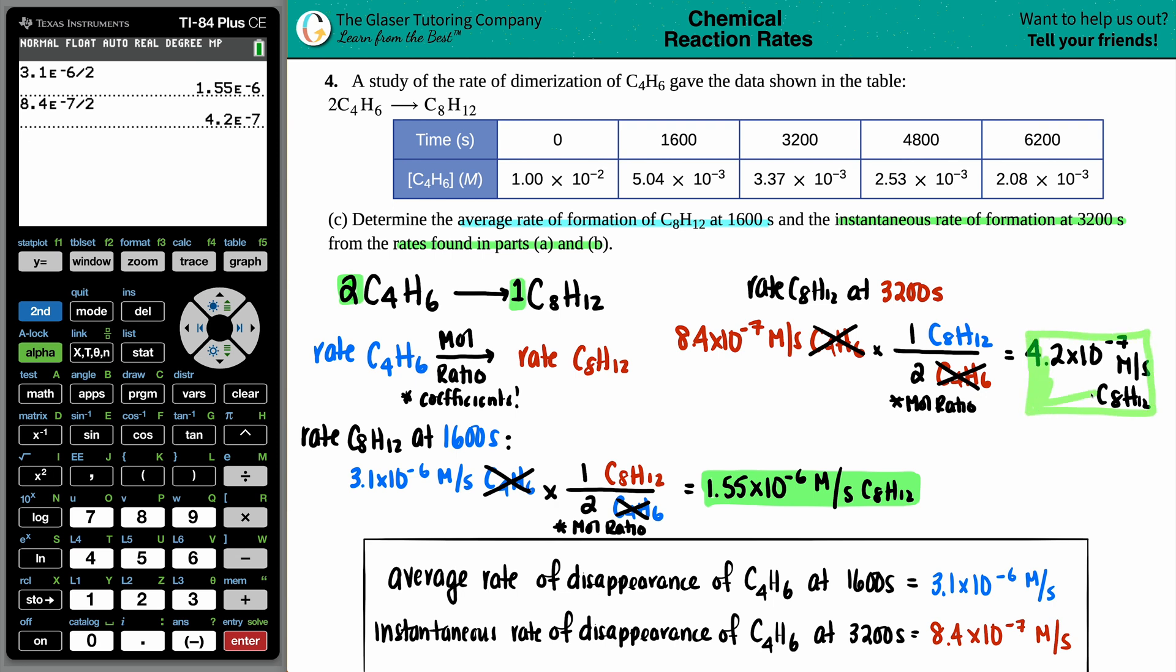And that's the second answer. This value was at the 1600 seconds, the average rate, and then this one is at the 3200, this is the instantaneous rate for the C8H12, and we're done.